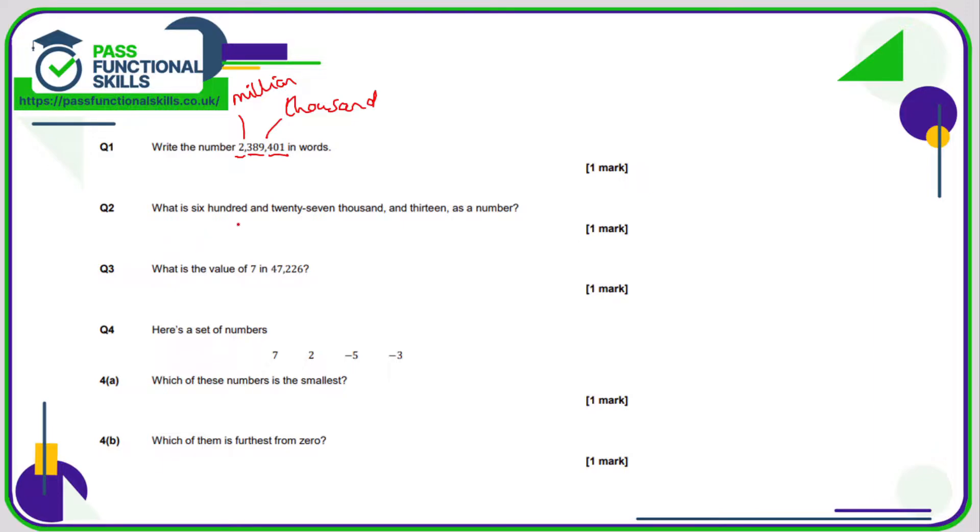Question number two, 627,013, what is that as a number? We know that the thousand is replaced with a comma. So to the left hand side of that, I'm just going to write 627. And on the right, I'm going to write 13, but I can't just write 1, 3. I'm going to have to write 0, 1, 3. So there we are, 627,013 with or without the comma. I find sticking the comma in is quite handy because that helps us remember the thousand, million, billion, trillion.